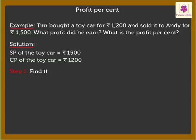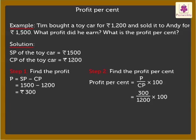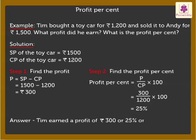Step 1: Find the profit. Profit is equal to selling price minus cost price, which is 300 rupees. Profit percent is equal to profit upon cost price into 100, which is equal to 300 upon 1,200 into 100. On reducing, we get 25 percent. Thus, Tim earned a profit of 300 rupees or 25 percent on the toy car.